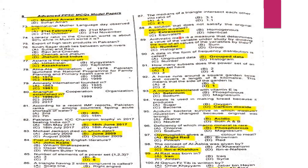MCQ 89: Arithmetic mean is a measure that determines the value of the variable under study by dividing the sum of all values of the variable by their total number.